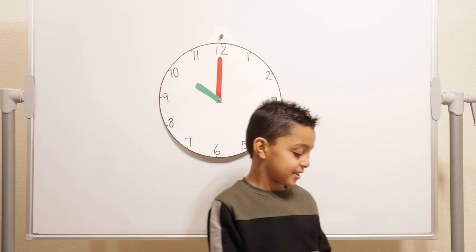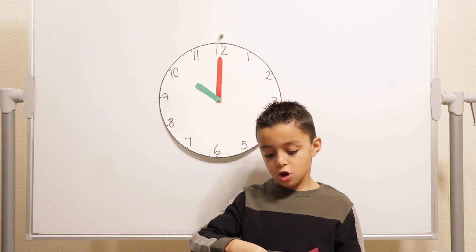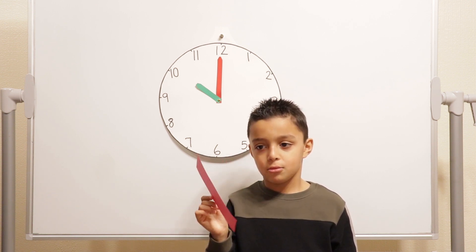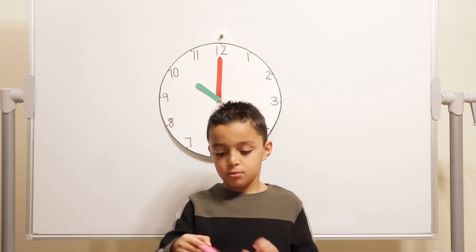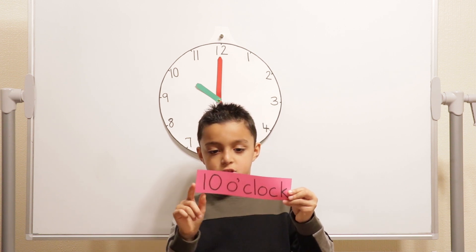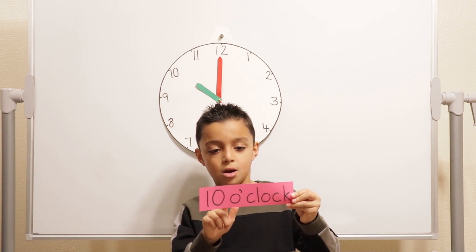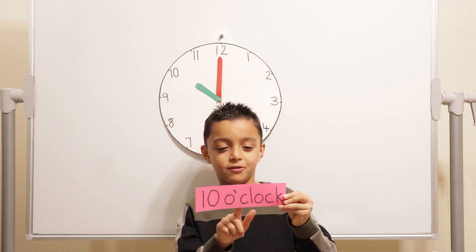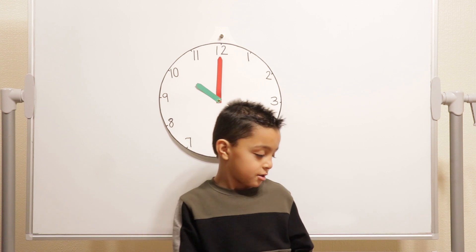Okay, and what's that between the o and the clock? I forgot the name. Apostrophe. Apostrophe. So, let's see that again for 10 o'clock. So, 10 o'clock, good. 10 o'clock.